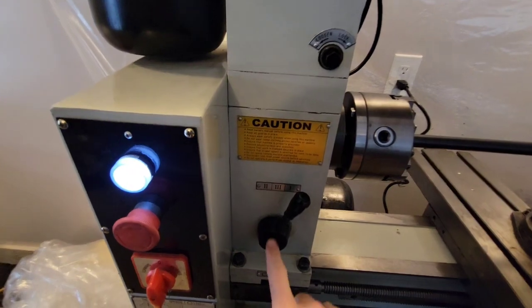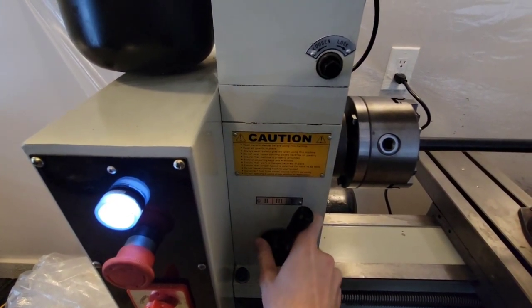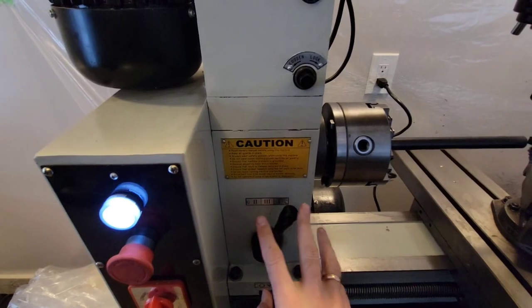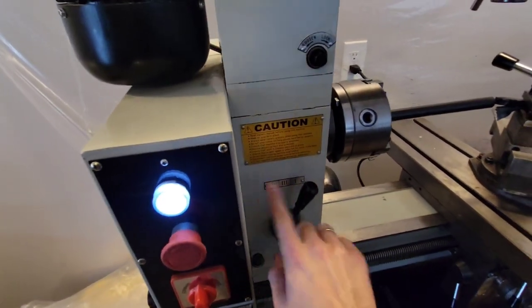And then here also we have, for the cross slide, we have three speeds that you can put by turning this lever.